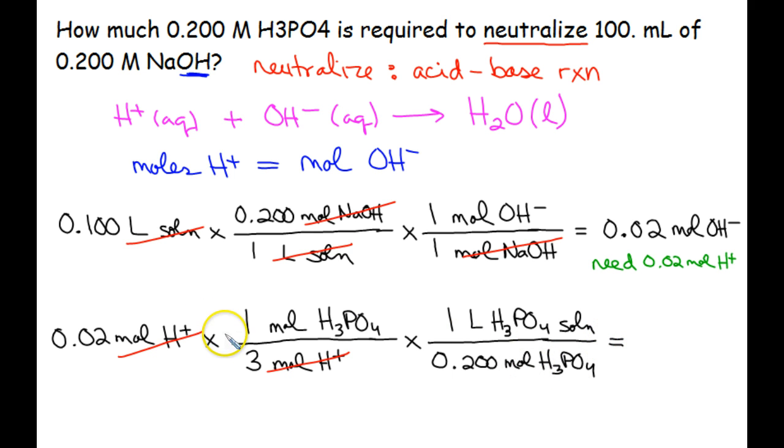When you plug this into your calculator, make sure you follow order of operations. This is going to be 0.02 divided by—keep your bottom in parentheses—3 times 0.2, close those parentheses, and then hit enter. I'm going to round this to three sig figs: 0.0333.